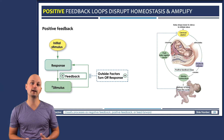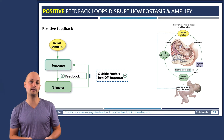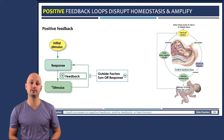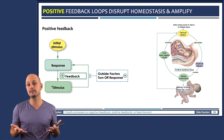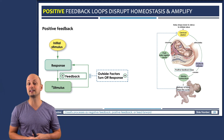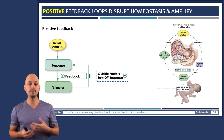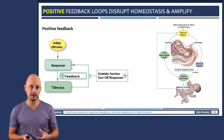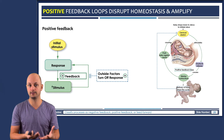Positive feedback loops also exist, although they're much less common inside the body. In fact, we're only going to see a few examples of positive feedback in our entire course, and that's because positive feedback loops take you out of homeostasis. In other words, positive feedback loops create responses that amplify the stimulus.